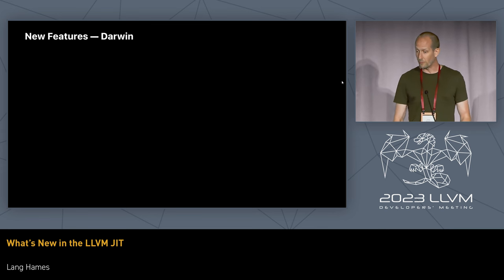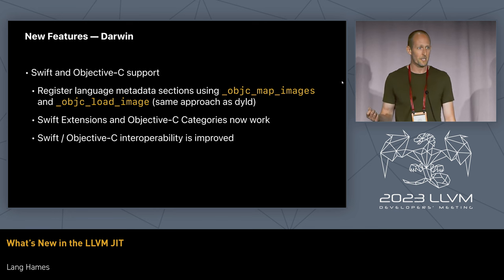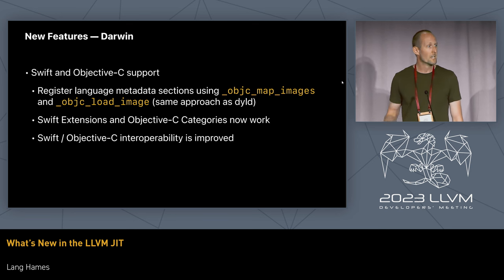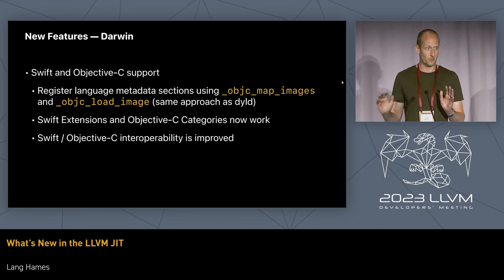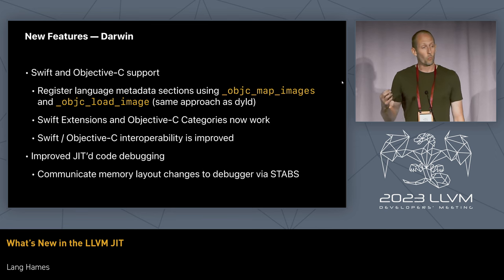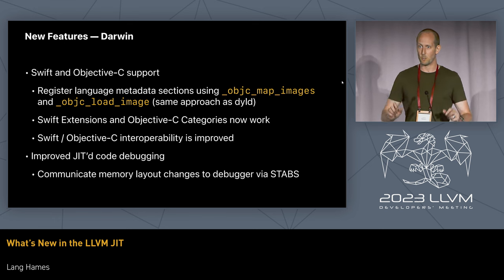On to features. On Darwin, we have improved Swift and Objective-C support in JITted code. We now register language metadata using the Objective-C map images and Objective-C load image APIs — the same APIs used by the System Dynamic Loader. Swift extensions and Objective-C categories should now work in JITted code, and interoperability between JITted Swift and Objective-C is improved. We're aiming for full support next year. We also have improved JITted code debugging on Darwin, working on a protocol to communicate memory layout changes in the JIT to the debugger using STAB symbols, which will maintain source line information even when the JIT moves things around in memory.